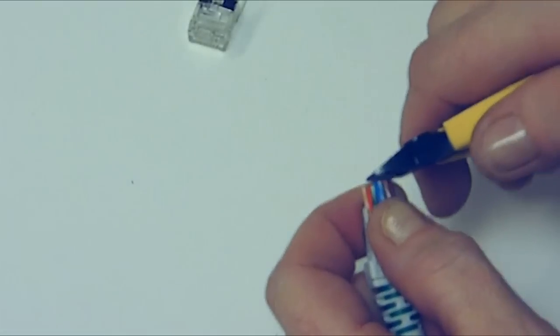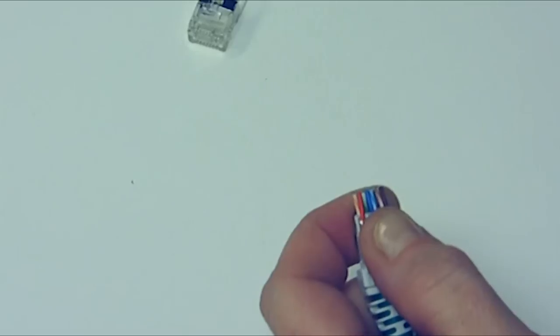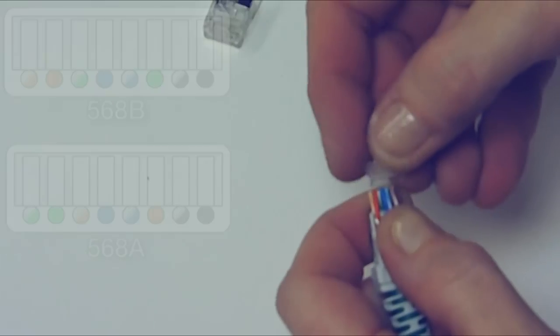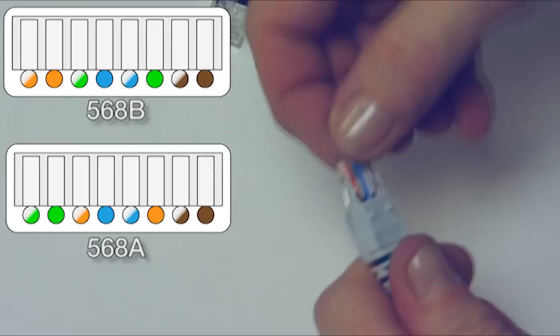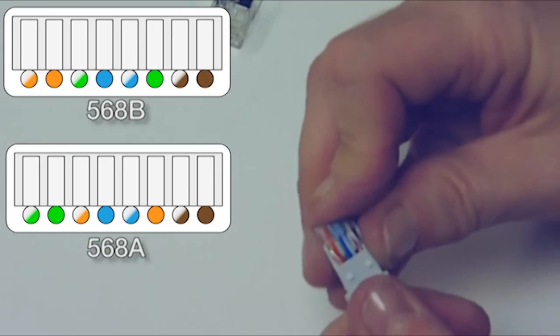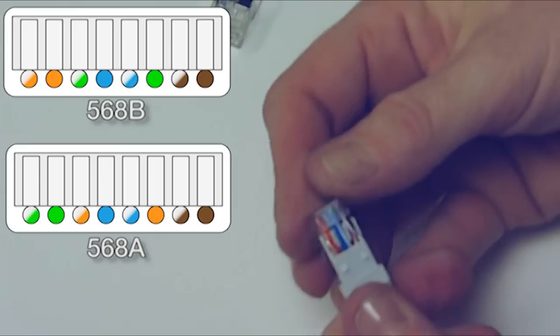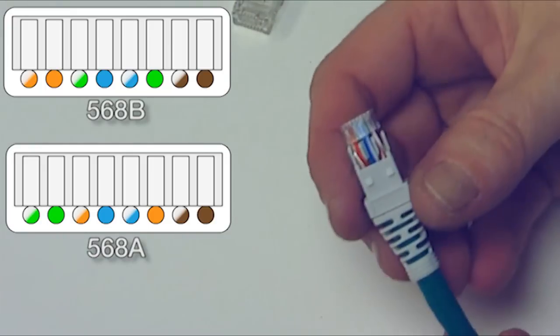Hold the ends of the twisted pair in order and trim ends to one quarter inch with the wire cutter. Insert the wires in the loading bar. The diagrams on the left of the screen show the correct order when following either the 568A or 568B pin assignments.